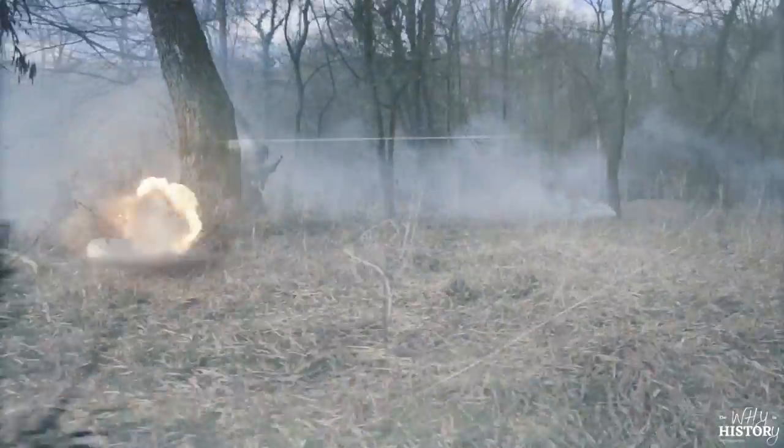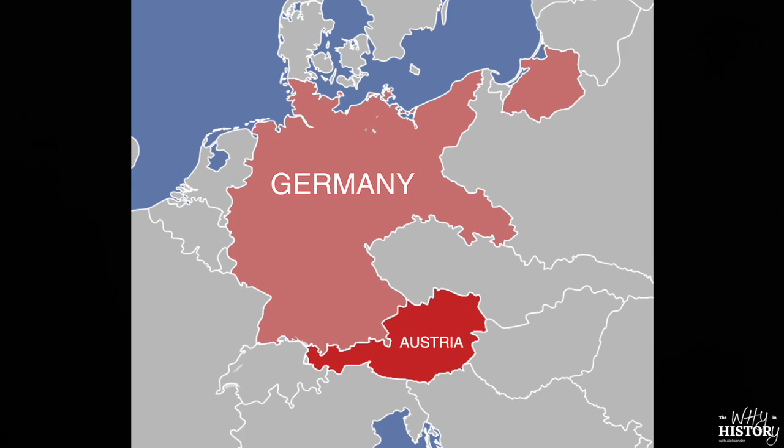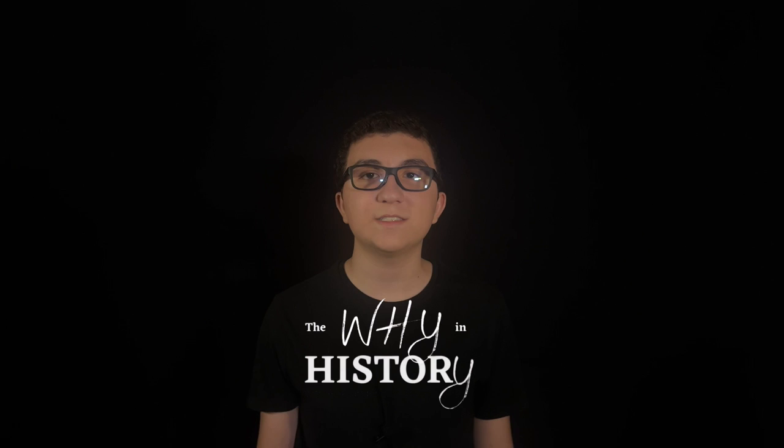In 1938, during the build-up to World War II, Germany annexed Austria in an event known as the Anschluss. But why did they do this? Hey Wystorians, welcome back to the Wyne History. I'm your host, Alexander.